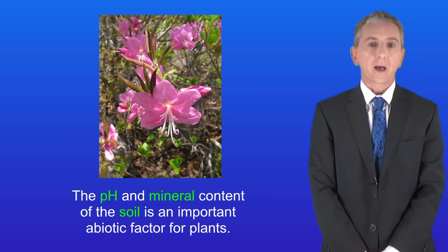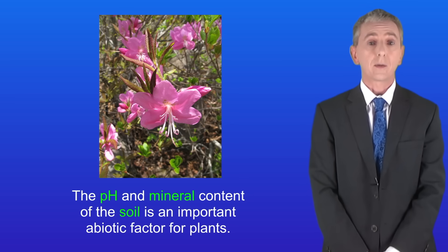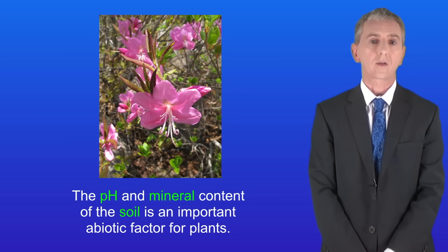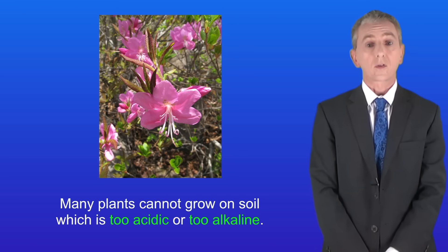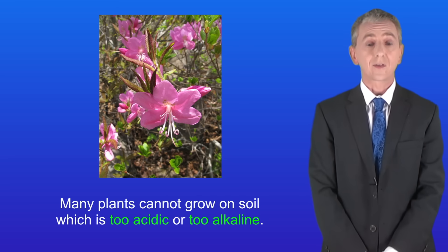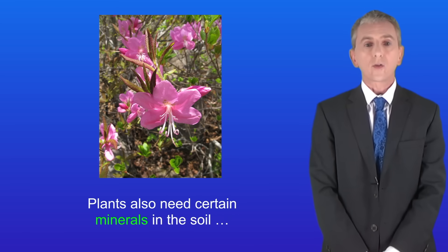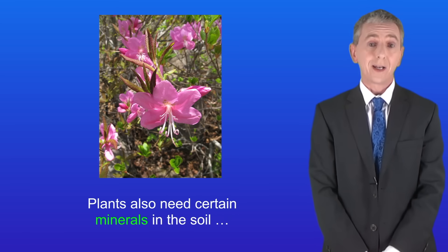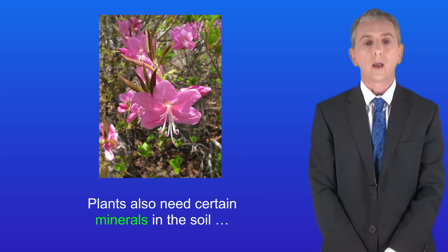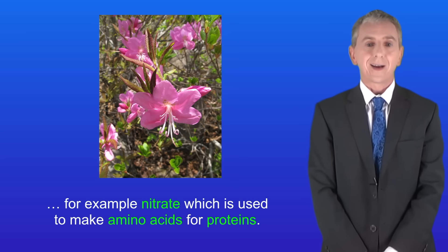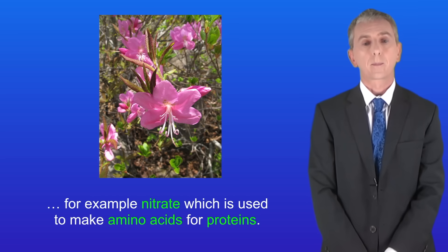The pH and mineral content of the soil is an important abiotic factor for plants. Many plants cannot grow on soil which is too acidic or too alkaline. Plants also need certain minerals in the soil, for example nitrate, which is used to make amino acids for proteins.